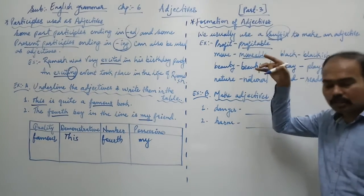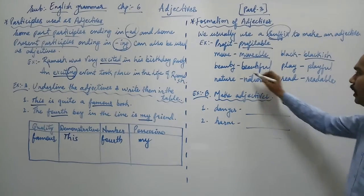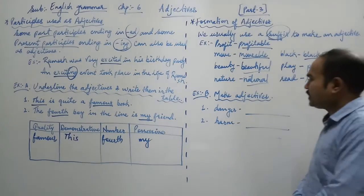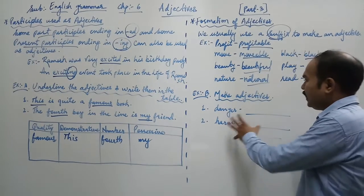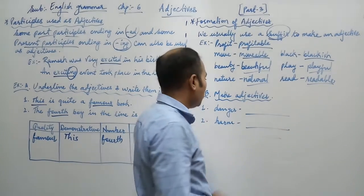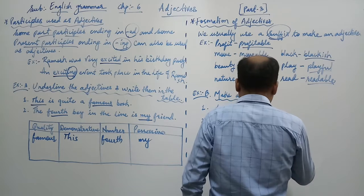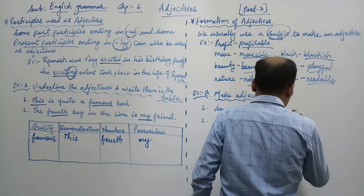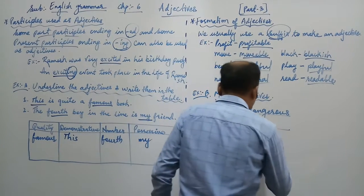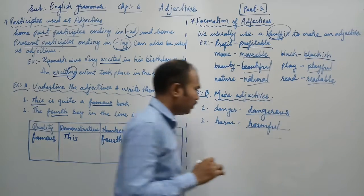In this way, you have to convert the given nouns, verbs and adjectives into an adjective. Understood? Now let us do the exercise number B. You have to make adjectives. As in the example. And we have to change it into adjective. Danger's adjective becomes dangerous. In the same way harm will become harmful.